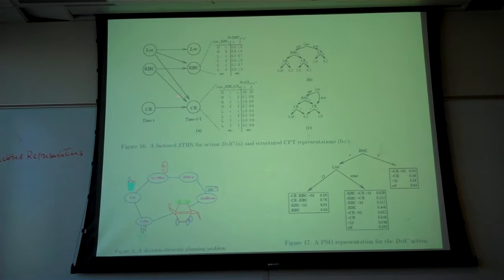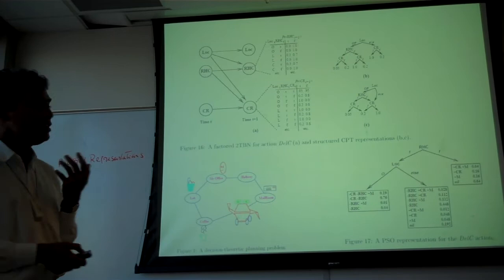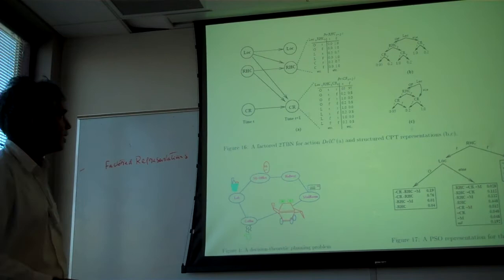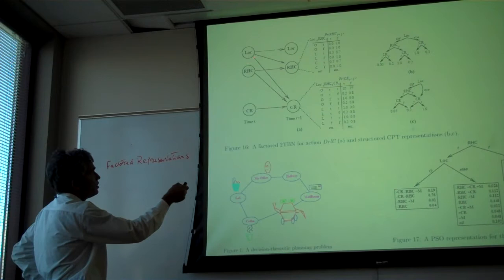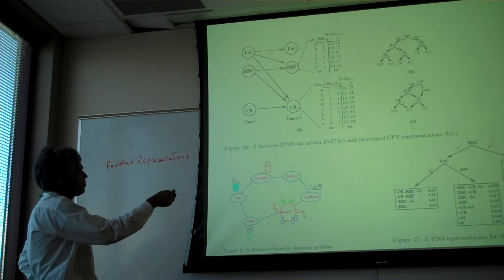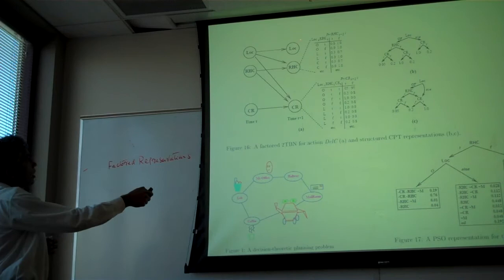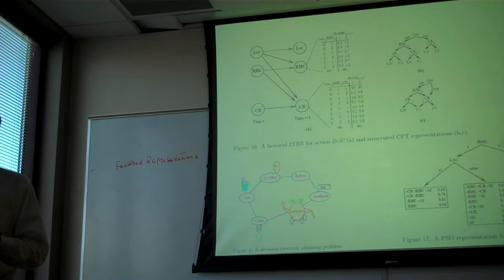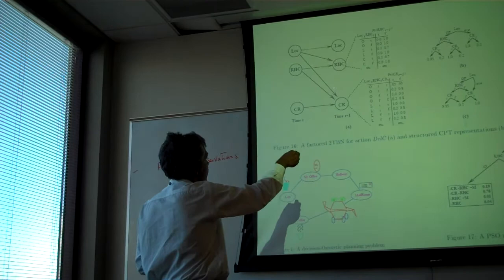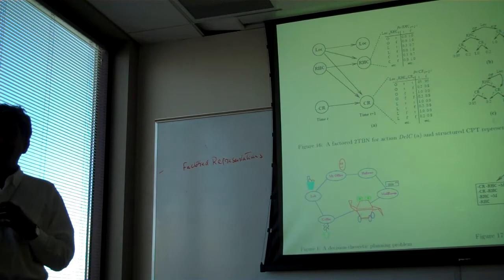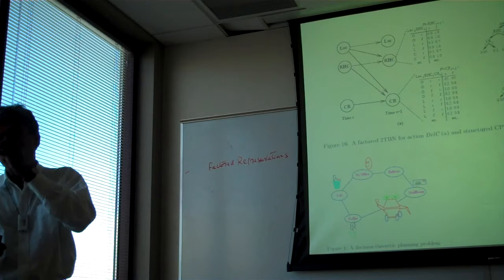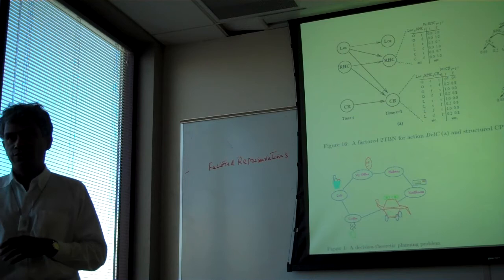In the 2TBN for deliver coffee, you have location_t and location_{t+1}, RHC_t (robot has coffee) and RHC_{t+1}, and CR_t (coffee request) and CR_{t+1}. These are different variables for different time slices. Since this is a Bayesian network, you provide a CPT for each node — a conditional probability table describing the probability of each value given the parent configuration.